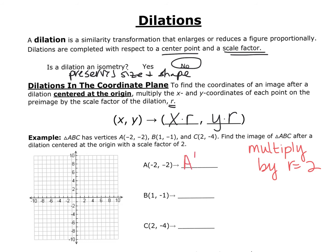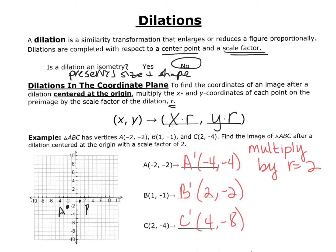Our A prime is going to be at (−4, −4). B prime will be at (2, −2), and our C prime will be at (4, −8). So we plot our original: A is at (−2, −2), B is at (1, −1), and C is at (2, −4). And our dilated image: A prime at (−4, −4), B prime at (2, −2), and C prime at (4, −8).